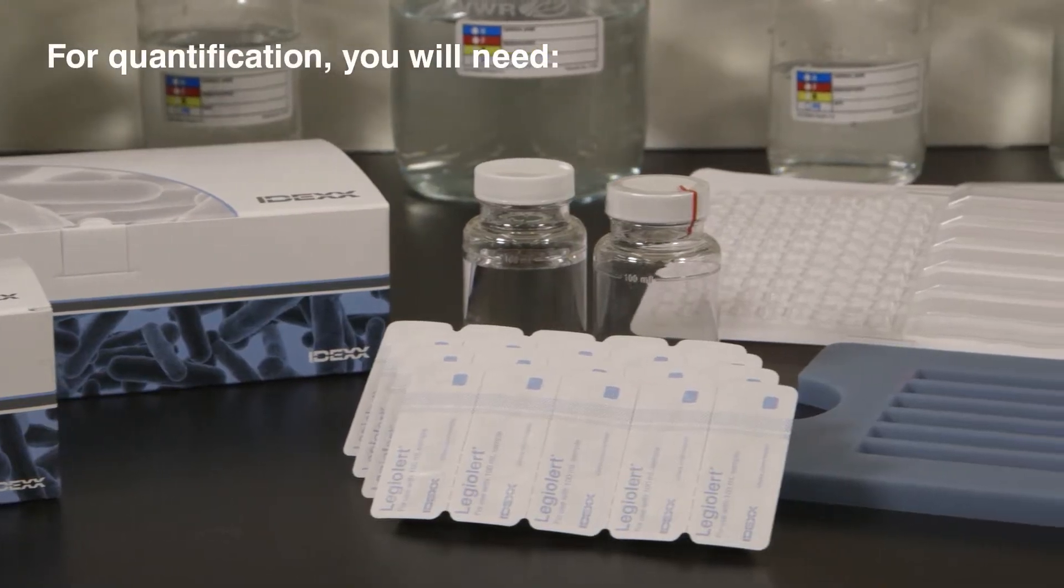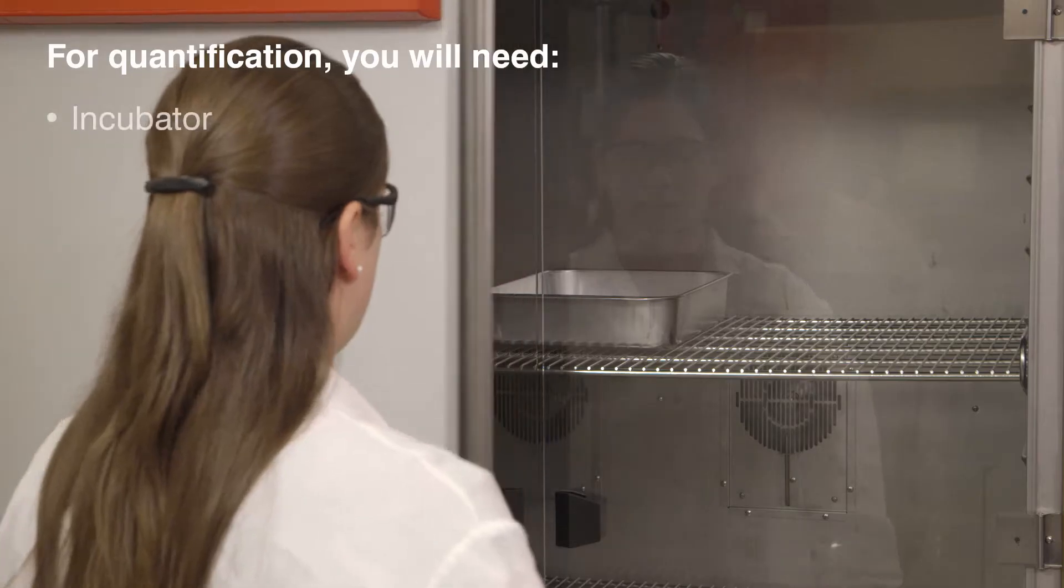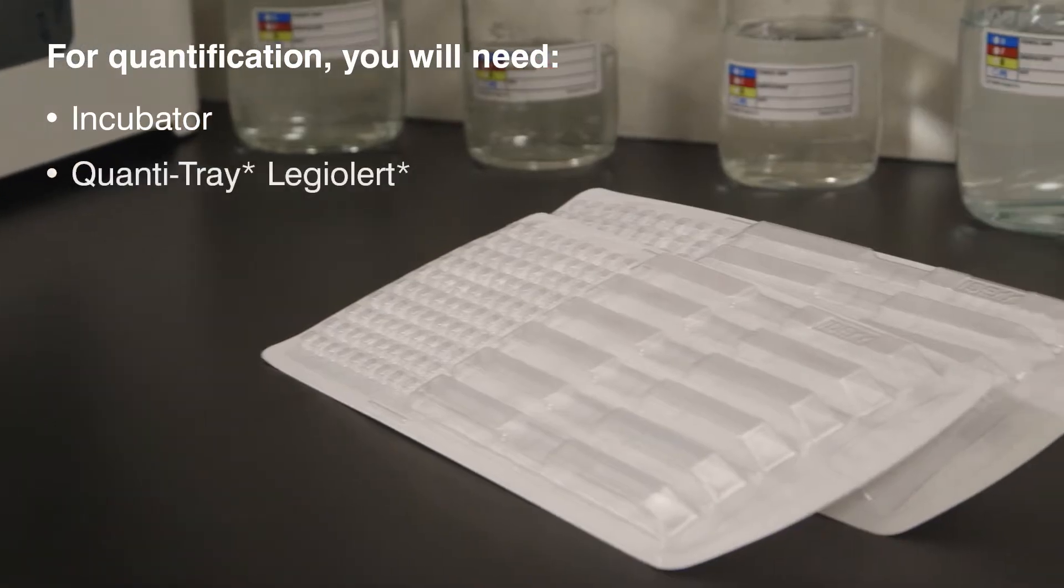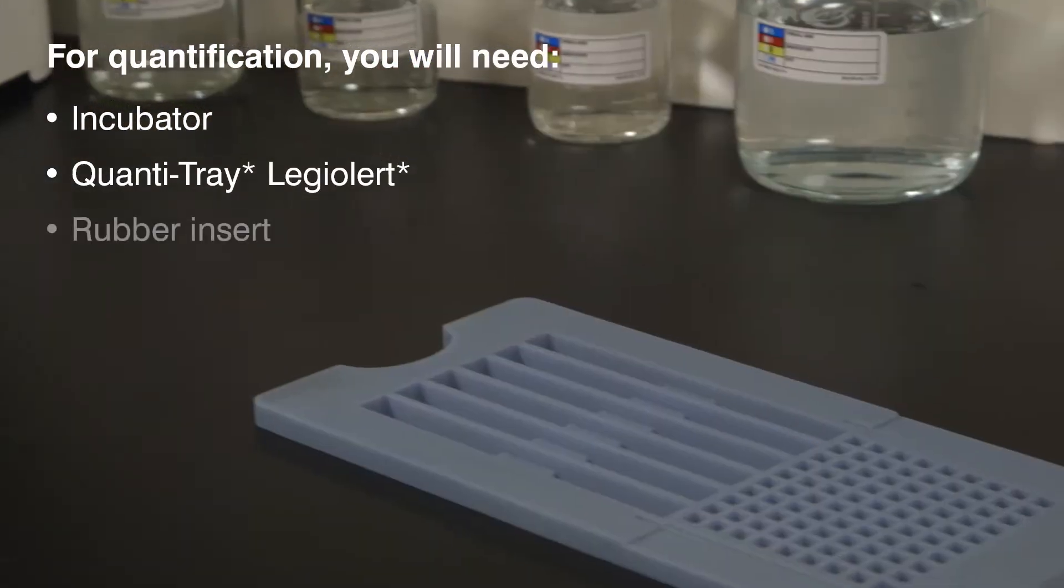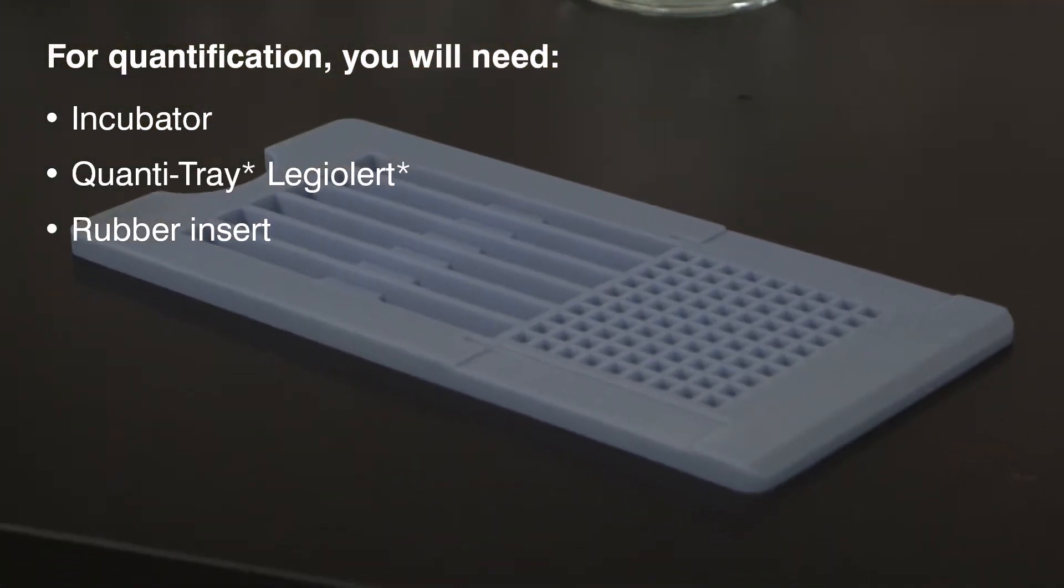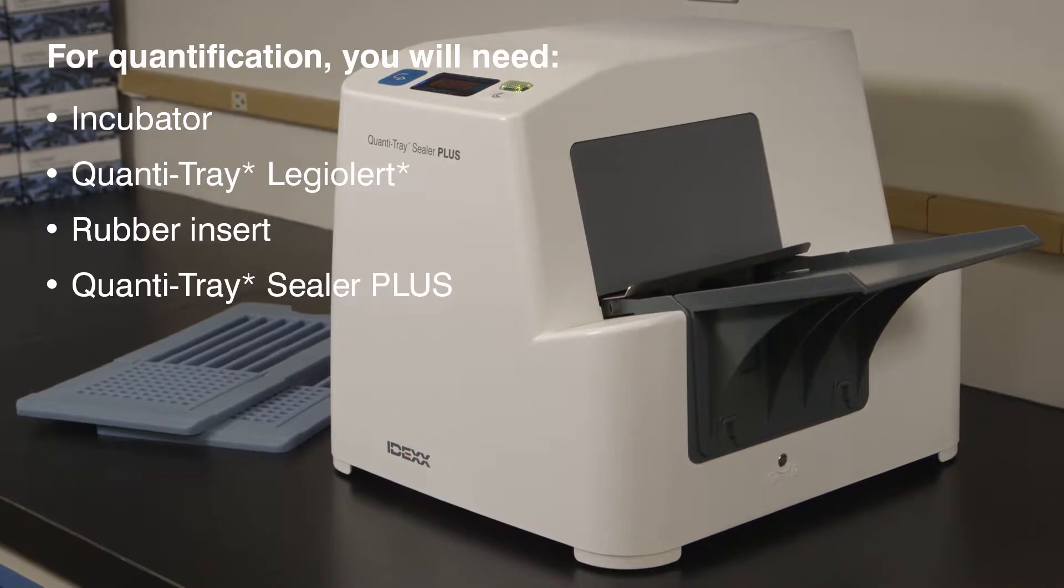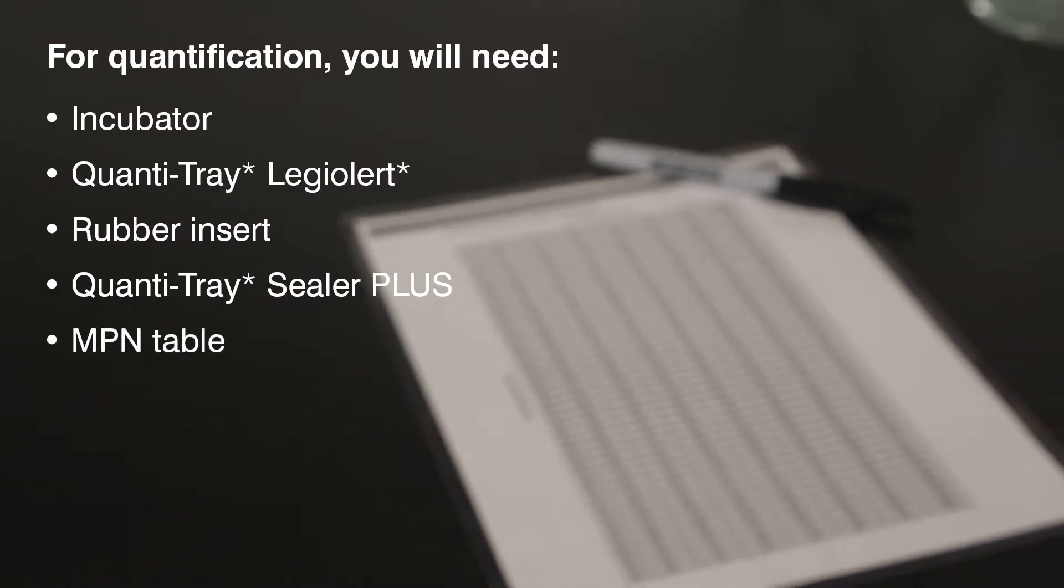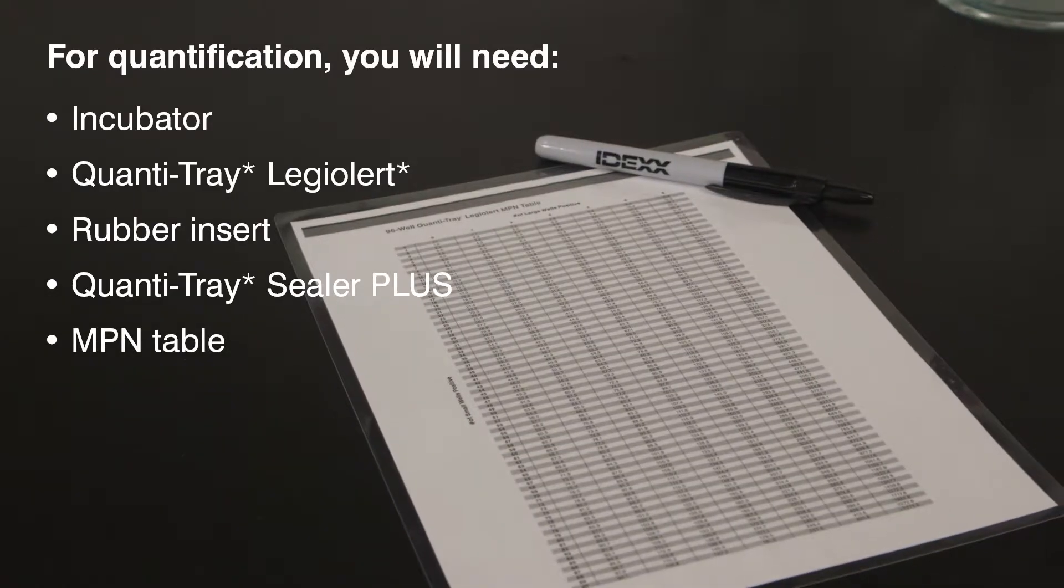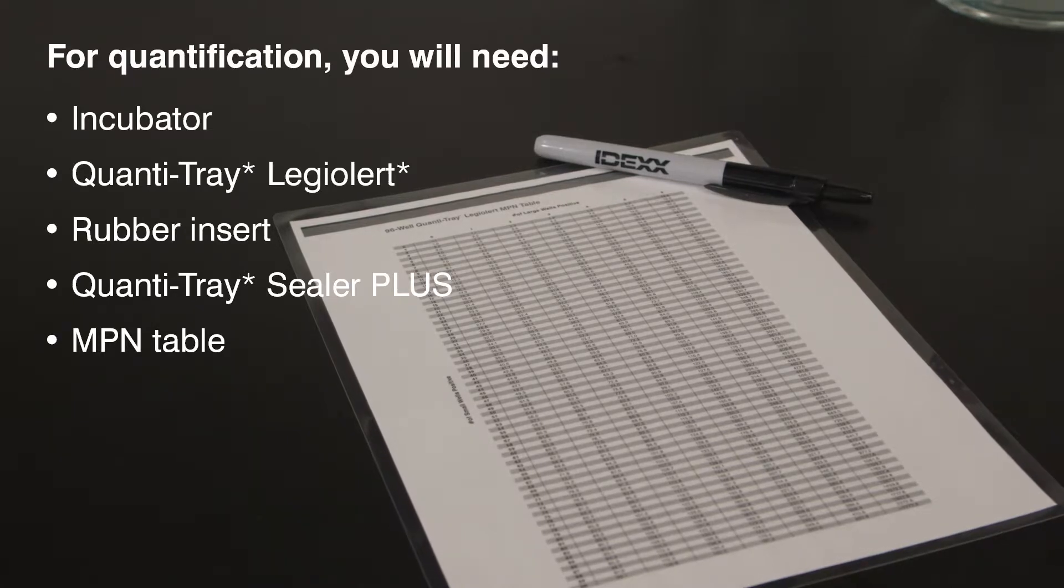For quantification, you will need an incubator, a quantitray LEG-ALERT tray, a quantitray LEG-ALERT rubber insert, a quantitray sealer plus, and the included most probable number table or the IDEX automated MPN generator program found at IDEX.com.